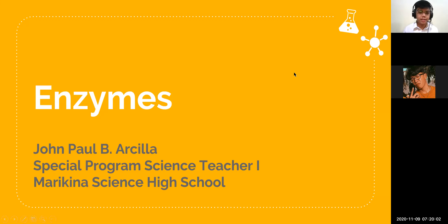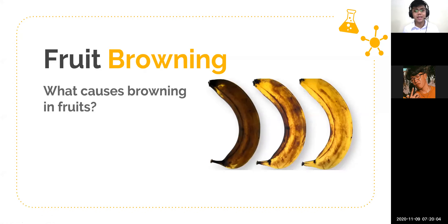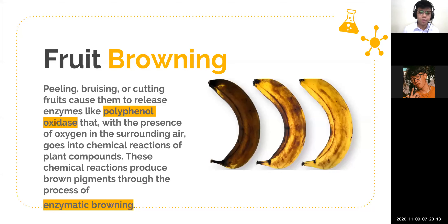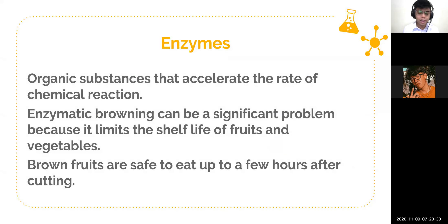Our topic for today is enzymes. A question: what causes browning in fruit? Since our topic is enzymes, the browning in fruit is actually caused by an enzyme called polyphenol oxidase. In the presence of oxygen, it metabolizes through different chemical reactions and produces brown pigments. That's an example of an enzyme we can find in our environment and surroundings.